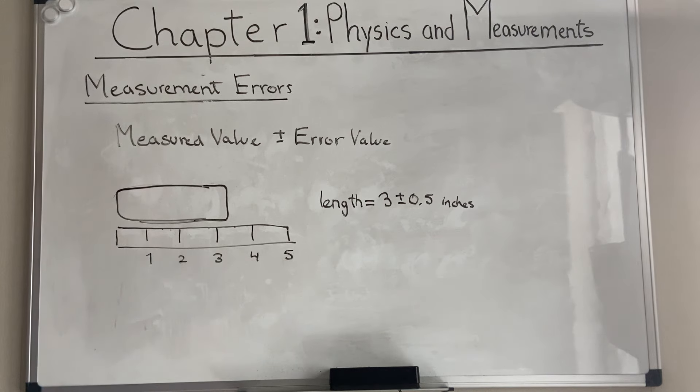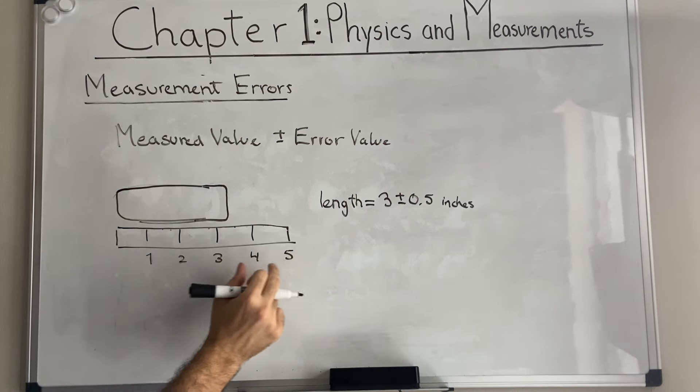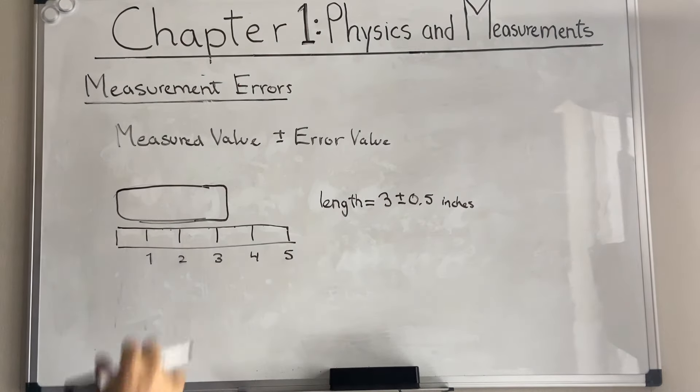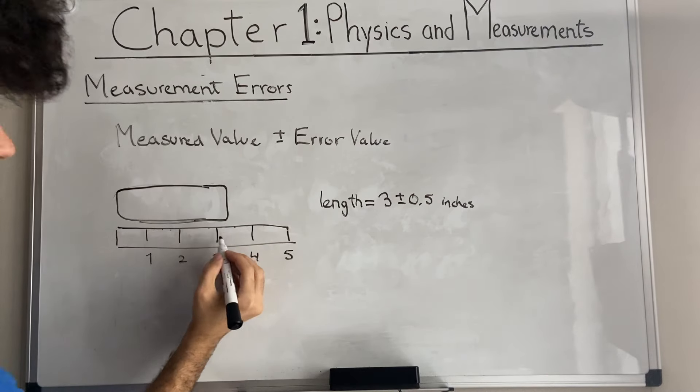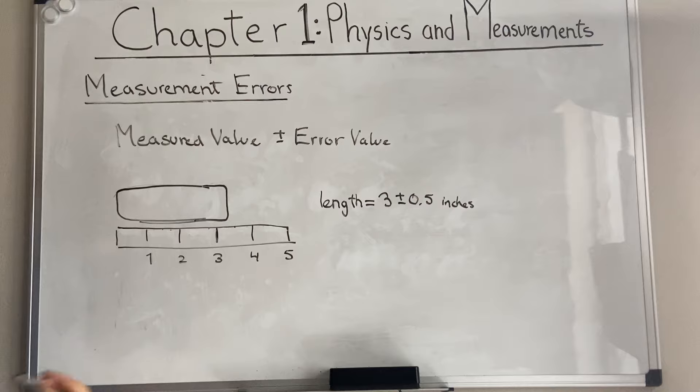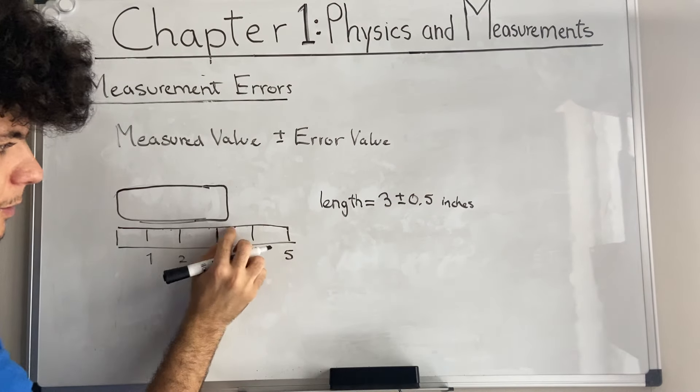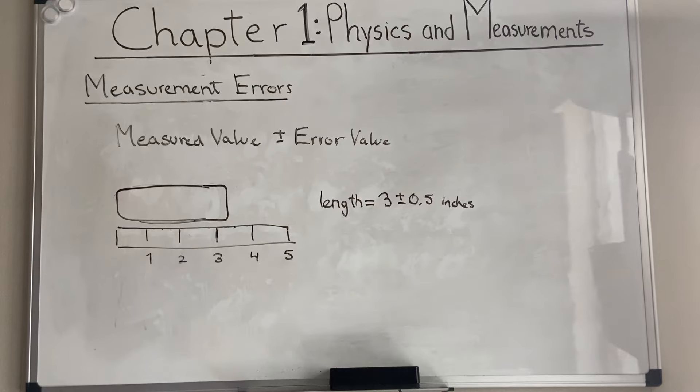Basically, we're finding the smallest increment, which is one inch. We divide that by two. And thus, we find our error value. Otherwise, the only measurement that we can be certain of, the measured value, is three. Because there aren't any measurements in between three and four. So we can't be sure of such a measurement.